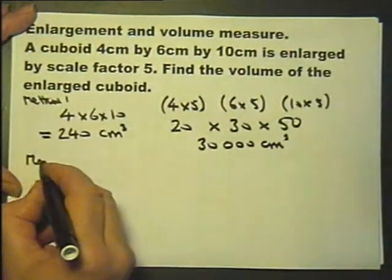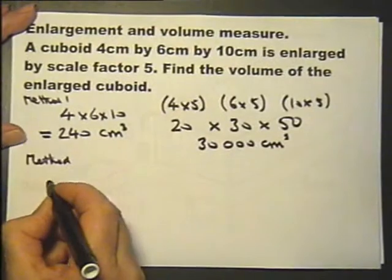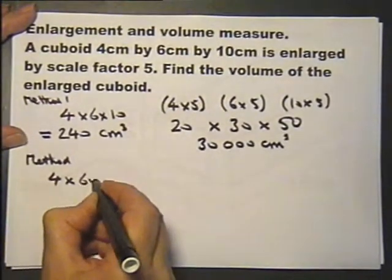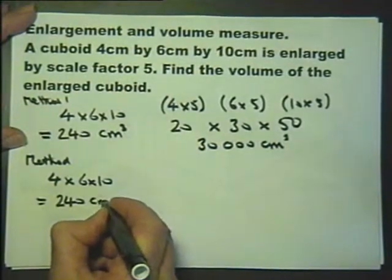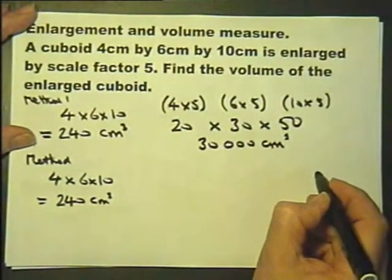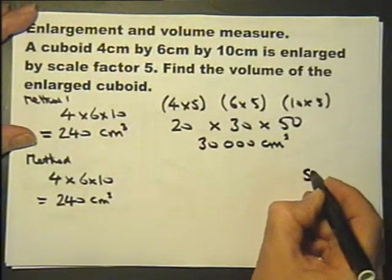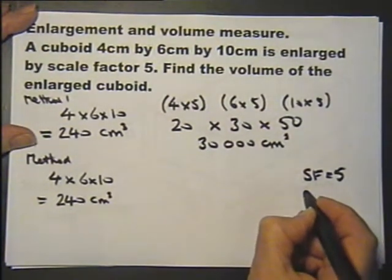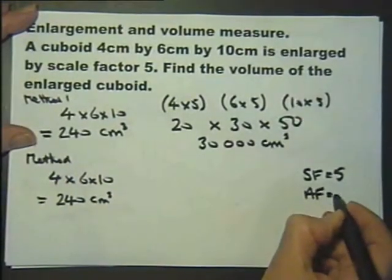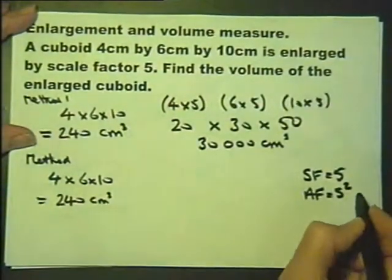Let's look at method 2. We've still got to consider working out the volume of the object cuboid. But now we're going to use the volume factor. The scale factor is 5, if we were doing area the area factor would be 5 squared, 25.